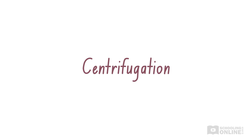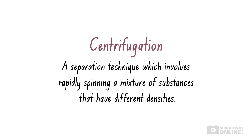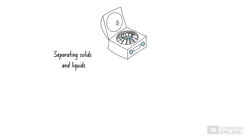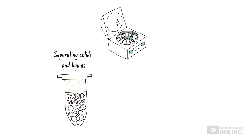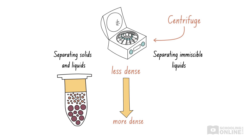Centrifugation is another separation technique that relies on differences in density. This involves rapidly spinning a mixture of substances that have different densities. Centrifugation can be used to separate solids and liquids if they have different densities — the more dense solids fall to the bottom of the container, while the less dense liquid floats on top. This process is essentially the same as sedimentation, except it occurs faster because the mixture is spun in a centrifuge. Centrifugation can also be used to separate immiscible liquids with different densities, which separate into layers with the highest density liquid at the bottom.